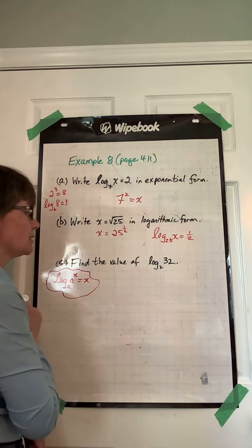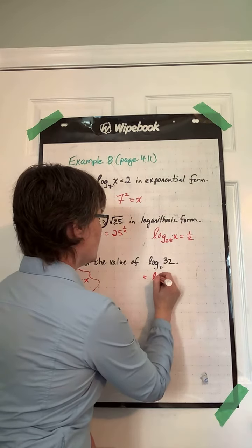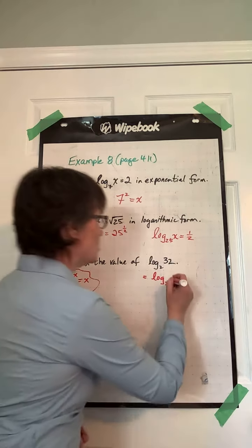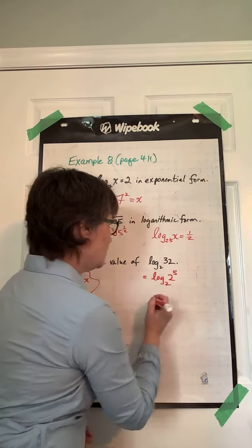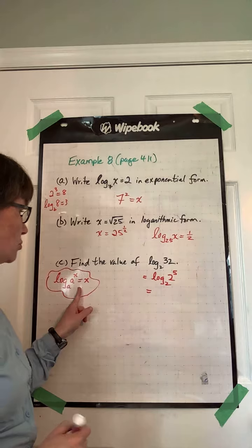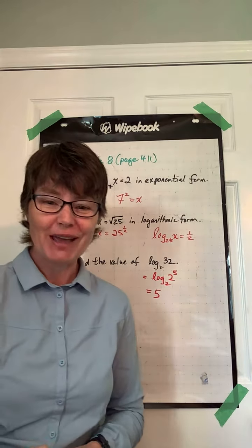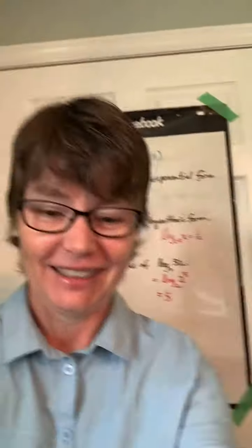Thinking about this, we could say this is equal to log base 2, and 32 can be written as 2 to the power of 5, therefore using this rule I know that this whole thing is just equal to 5. There we have it. Thank you.